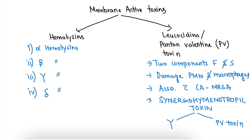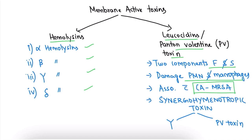Moving to membrane active toxins, we have two types: hemolysins and leukocidins. Leukocidins include PVL (Panton-Valentine Leukocidin), which has two components (F and S), damages PMNs and macrophages, and is associated with community-associated MRSA. There is also the synergohymenotropic toxin, which has two components: gamma hemolysin and PVL toxin.